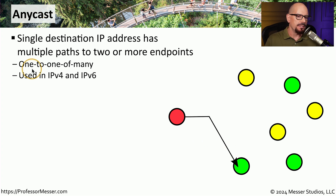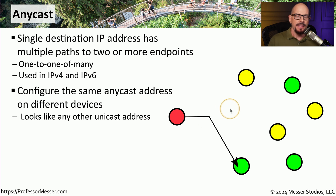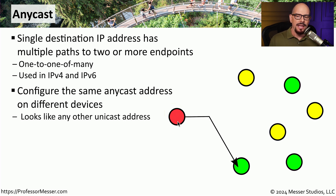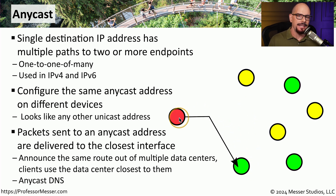Anycast is used when one device needs to send to one of many devices. This is where a single destination IP address may be sent to one of many different devices on the network, and it's something you'll commonly find with both IPv4 and IPv6. The devices receiving the anycast communication are all configured in very similar ways, allowing the originating device to send data to the anycast address, and whatever device is closest will receive that traffic. A good use case would be anycast DNS, where a DNS query is sent out and the closest data center responds to that request.